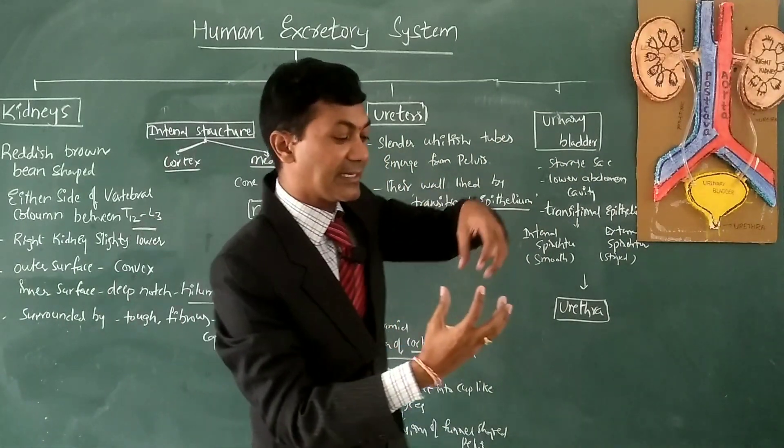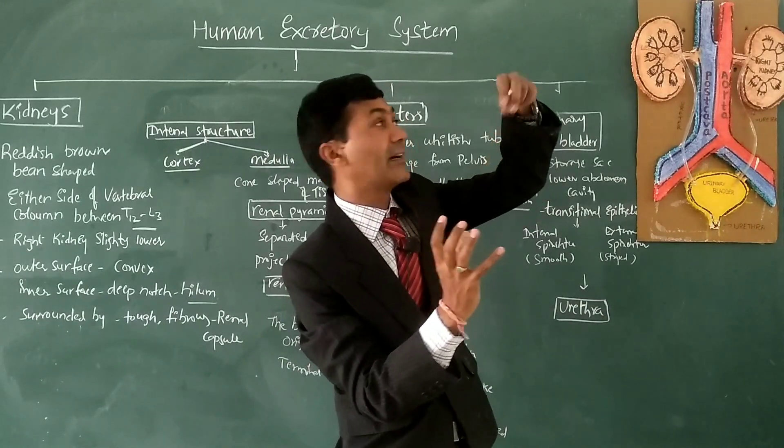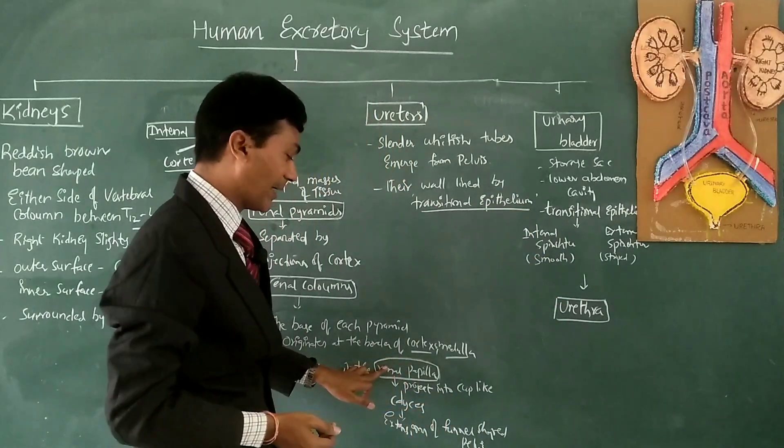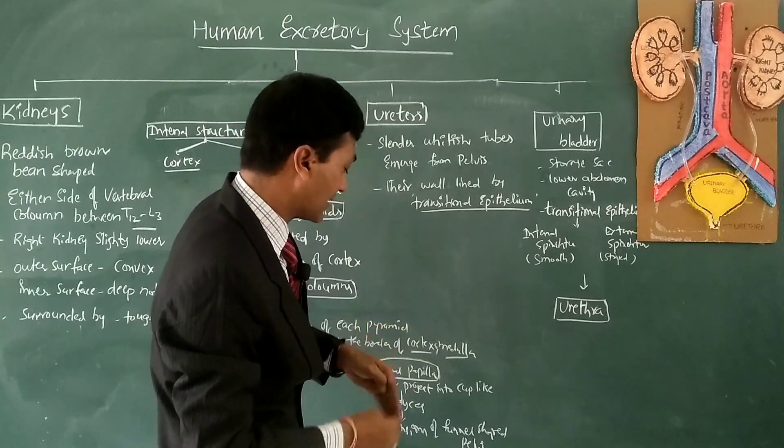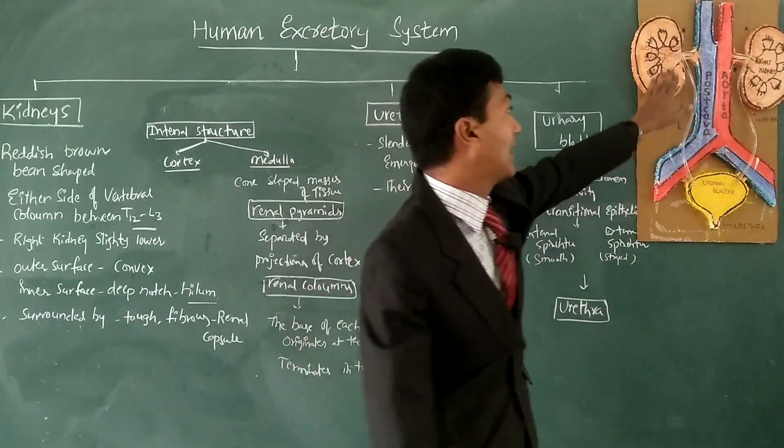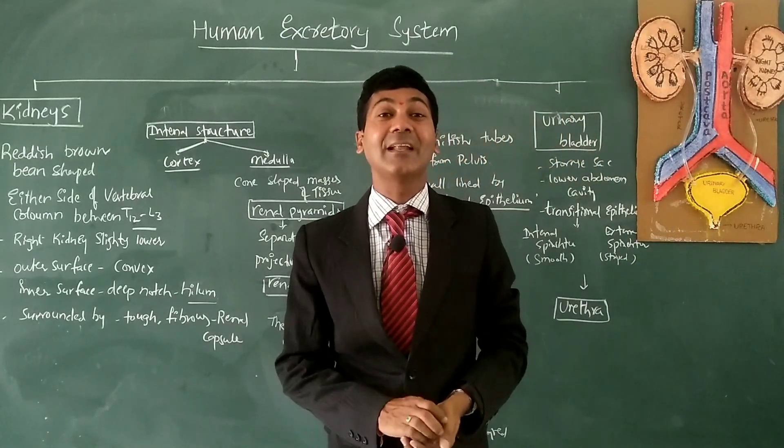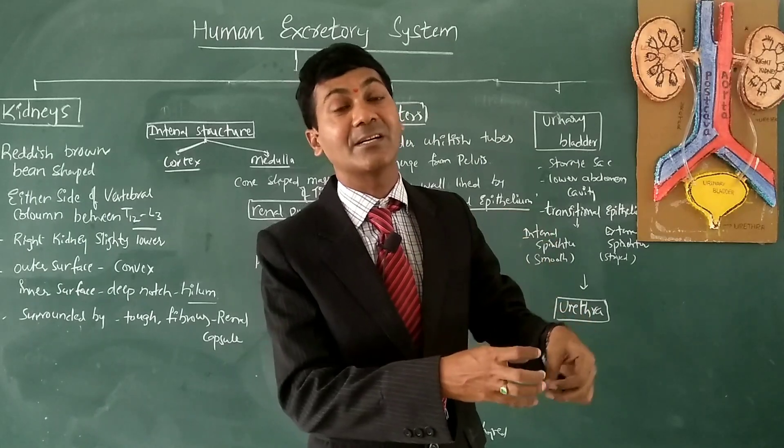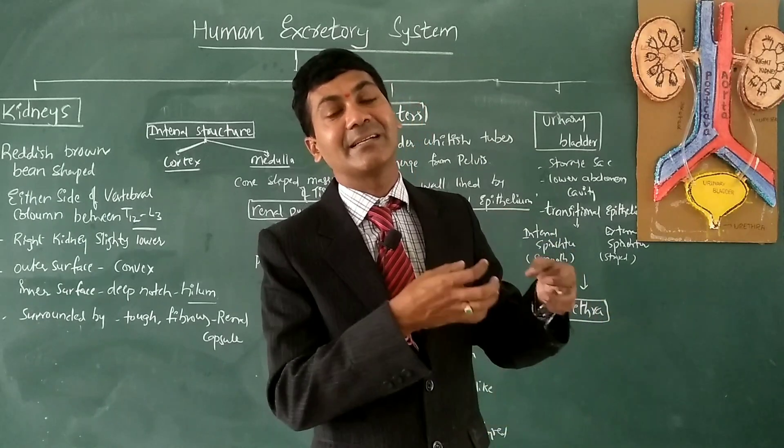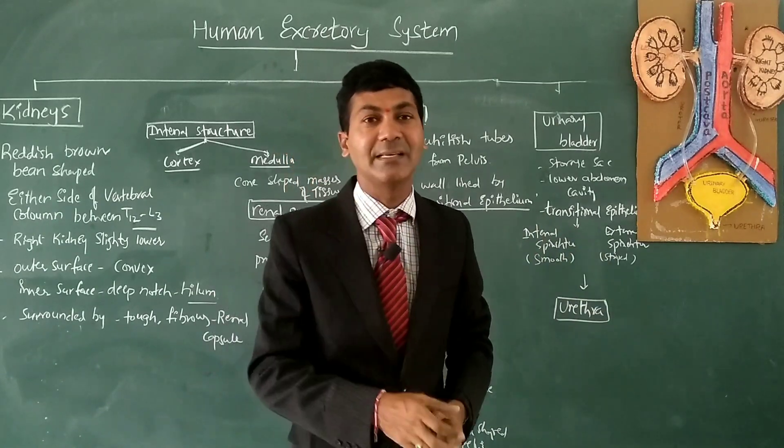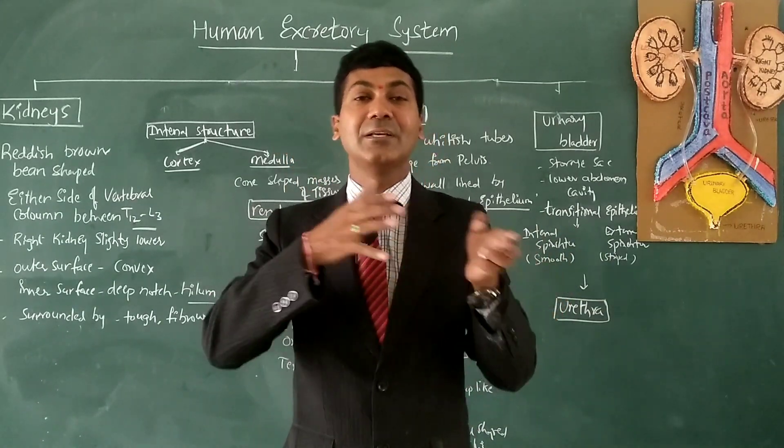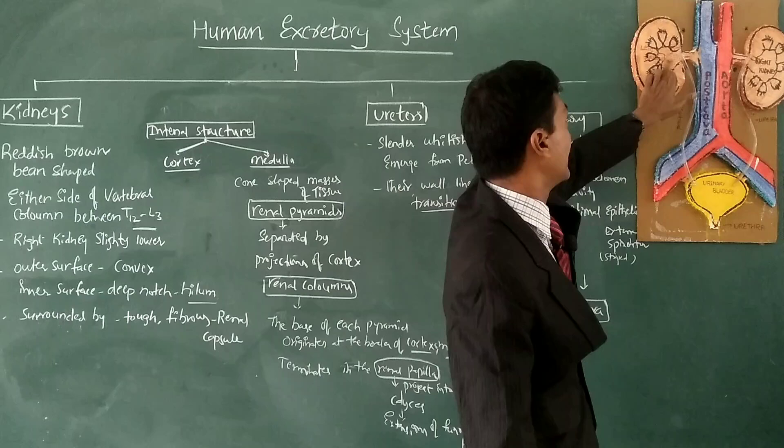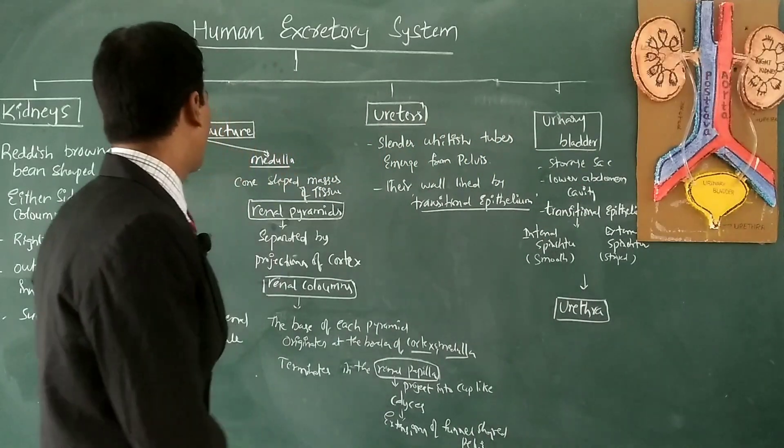The calyces are where the renal pyramids terminate. The renal papilla is connected to the calyces, which are extensions of the pelvis. The pelvis is where urine, after forming from the nephrons and collecting ducts, drains and collects. The pelvis pumps the urine into the ureters to send it to the urinary bladder.